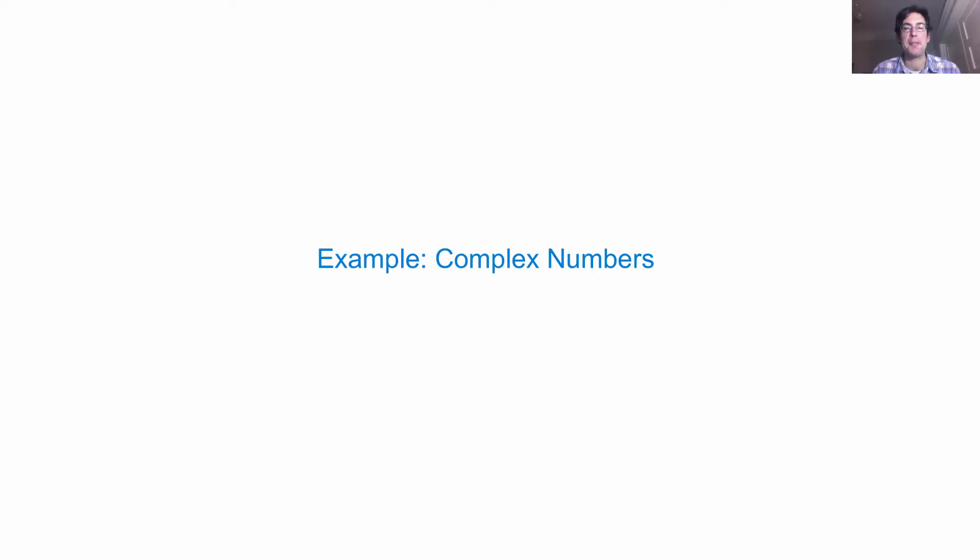We'll do an extended example now. It's going to use property methods, it's going to use the idea of interfaces and message passing in order to implement complex numbers.